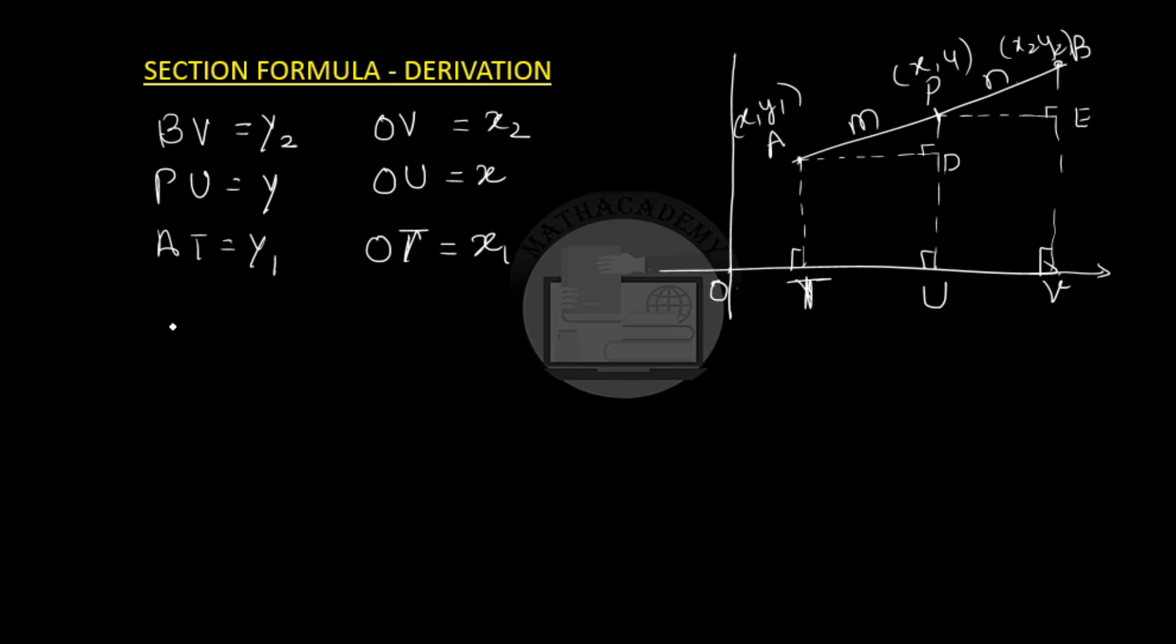Now, let us consider triangle APD and triangle PBE. In these two triangles, we see that angle ADP is equal to angle PEB, equal to 90 degrees. They are right angles as we have dropped the perpendiculars AD and PE on PU and BV. Similarly, angle PAD will be equal to angle BPE, and why are these angles equal? Because they are corresponding angles.